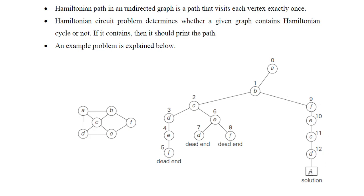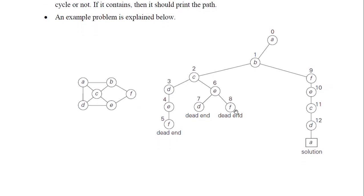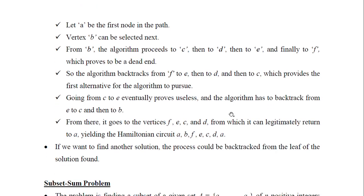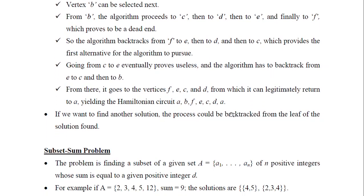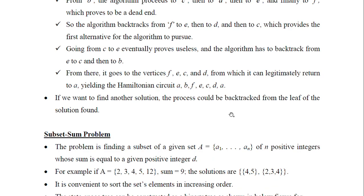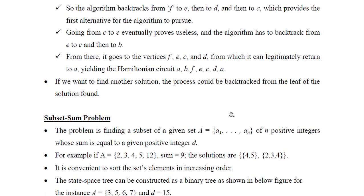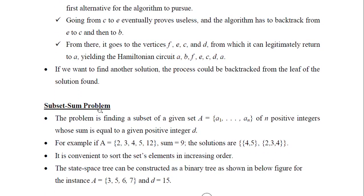There is a possibility of more than one solution. If I complete the whole state space tree, I can find all possible solutions. Let us see another example that can be solved by means of this backtracking technique — the subset sum problem.